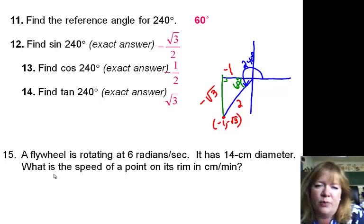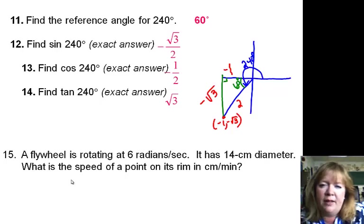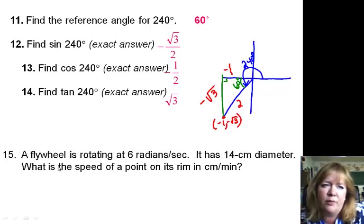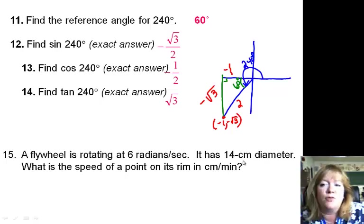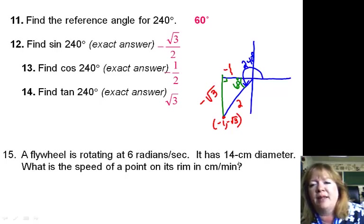This is where people had trouble the most — angular velocity. Don't fear over this; it's just a simple formula. The only thing is you have to watch your units and make sure that your omega is in radians per unit of time. This first one's straightforward: a flywheel is rotating at 6 radians per second. It has a 14-centimeter diameter. What's the speed of a point on its rim in centimeters per minute? Your time is in seconds and your radius is in centimeters, so when we multiply that it's going to be in centimeters per second.